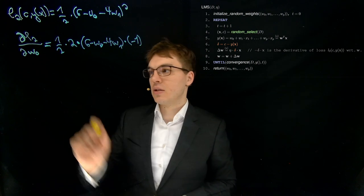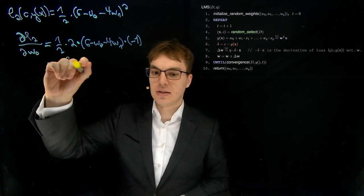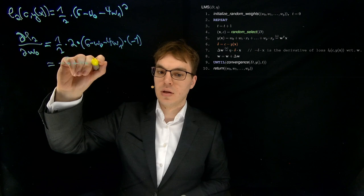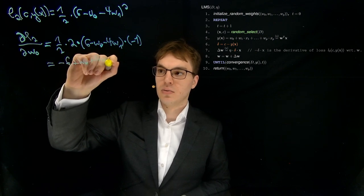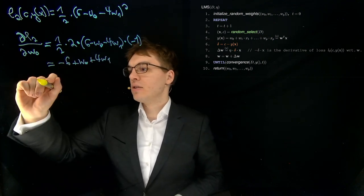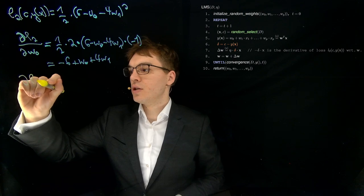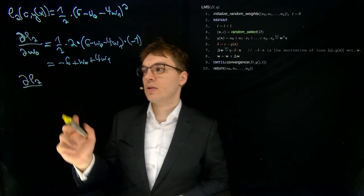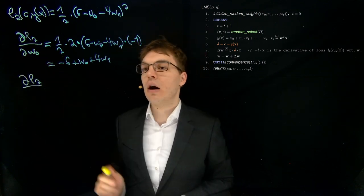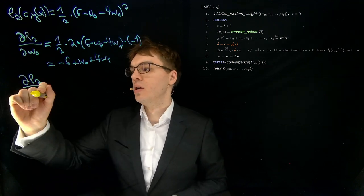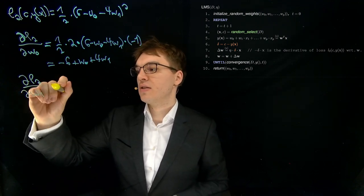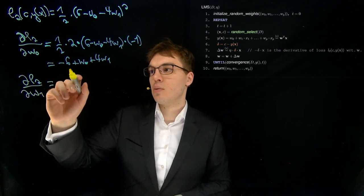And we can simplify this to minus six plus W0 plus four W1. And now let's compute the other partial derivative, because, so this is to know how to update the first parameter, and now we want to know how to update the second parameter of our model.